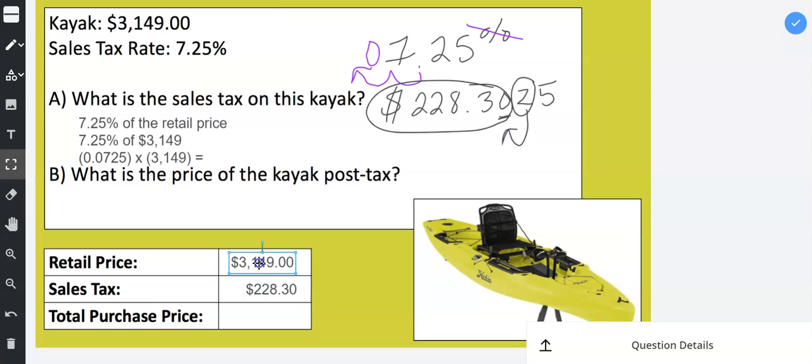Remember when you're adding with decimals, you line up the decimals. That's for addition and subtraction. And then the final question asks, what is the price of the kayak post-tax? Post means after. So you need to know, you need to learn that post means after if you don't already know that. So after tax is added.